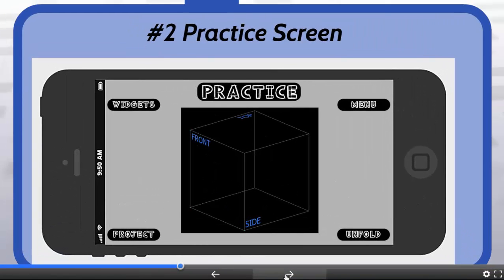If the student chooses the practice area, they will be taken to this next screen which has some different options. On the top right, you can go back to the menu home screen. On the top left, you can select a different widget, which is like a 3D model that they can choose from. On the bottom left, they can choose a project option, and on the bottom right, they can choose an unfold option.